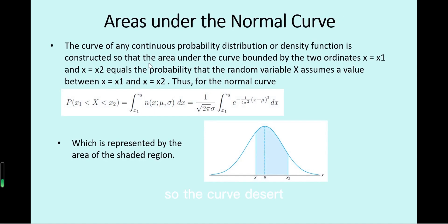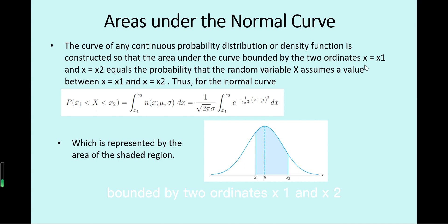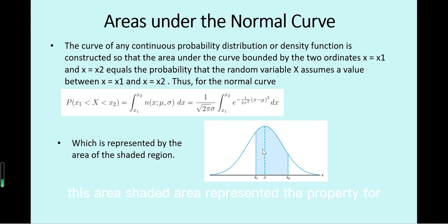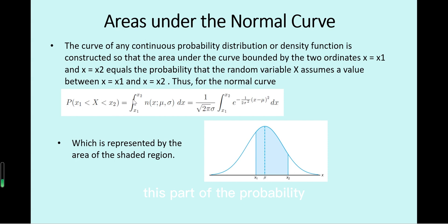The density curve for any continuous probability distribution is constructed so that the area under the curve bounded by two ordinates x1 and x2 equals the probability that the random variable x assumes a value between x1 and x2. For normal distribution, this probability is calculated with the integral of the normal density function from x1 to x2.